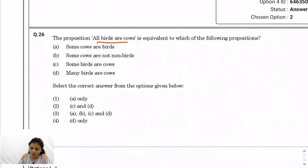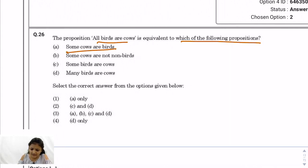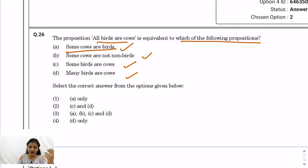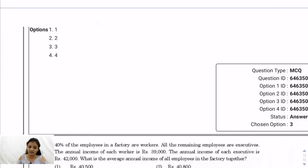Question 26: 'All birds are cows' is equivalent to which proposition? If all birds are cows, then some cows are birds (true), some cows are not non-birds (true), some birds are cows (true), and many birds are cows (true). The correct answer is option 3: A, B, C, and D — all follow.